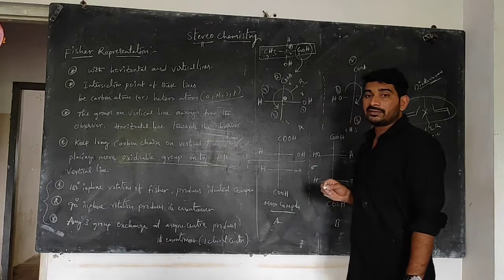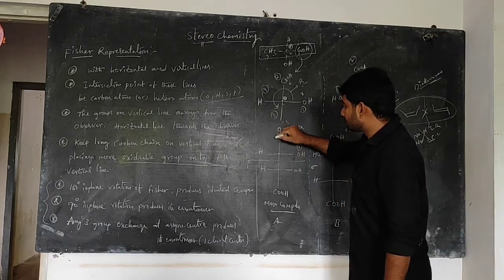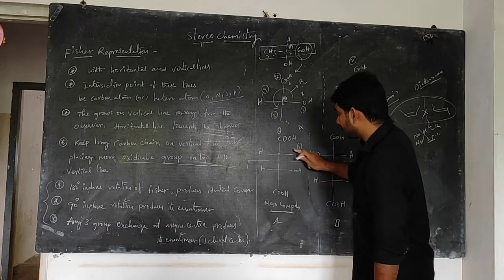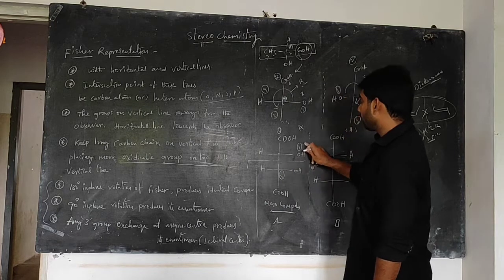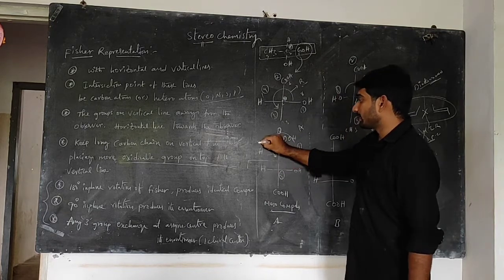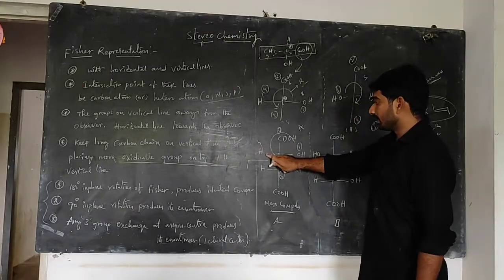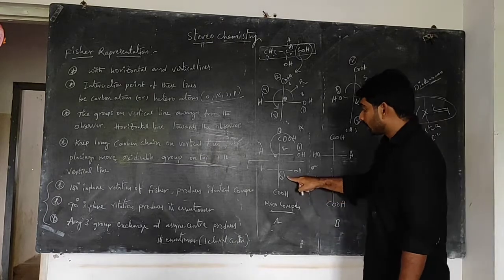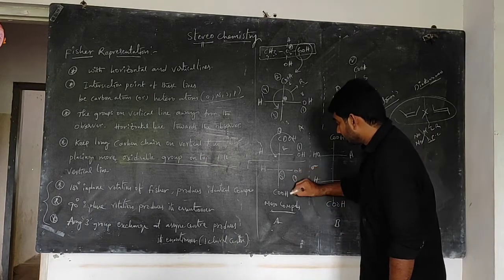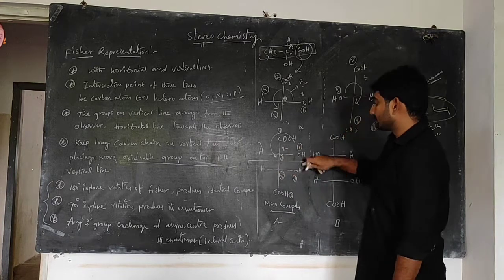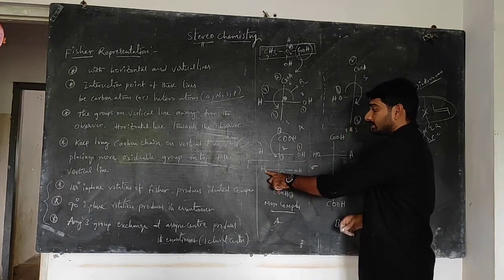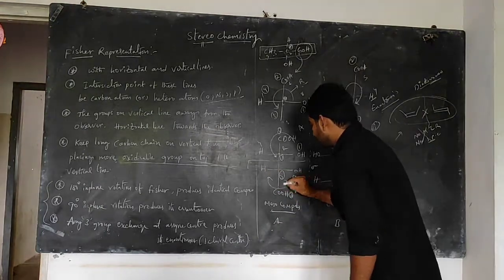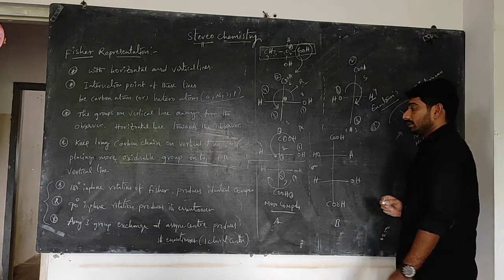Checking the configurations of tartaric acid: for the top carbon, anti-clockwise 1→2→3 but least priority group on horizontal line, so it becomes R. For the bottom carbon, clockwise direction but least priority group on horizontal line, so R becomes S. Therefore this active form has R at C1 and S at C2.